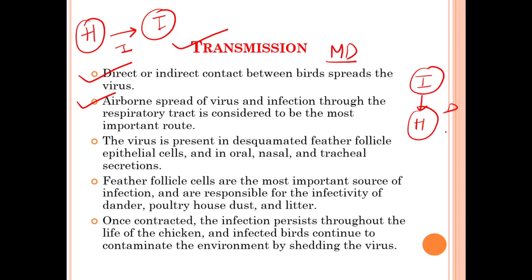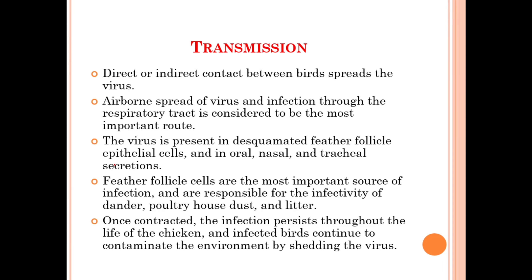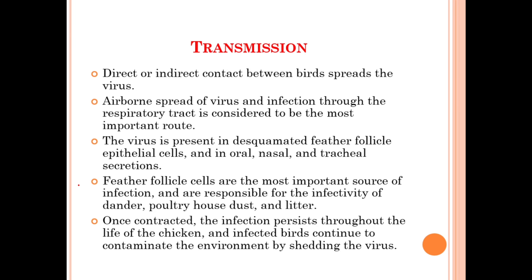The virus is present in the desquamated feather follicle epithelial cells and in oral, nasal, and tracheal secretions. An infected bird can shed Marek's disease virus through desquamated feather follicle epithelial cells, and the Marek's disease virus present there acts as the source of transmission.